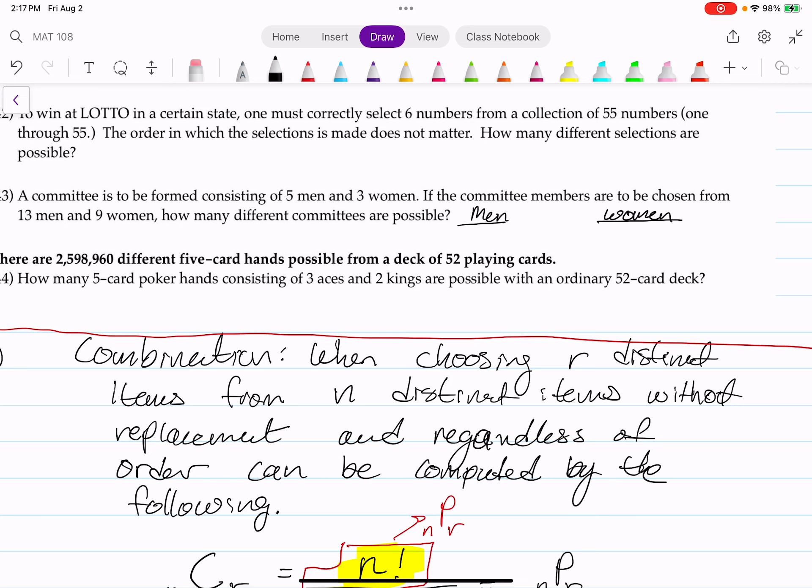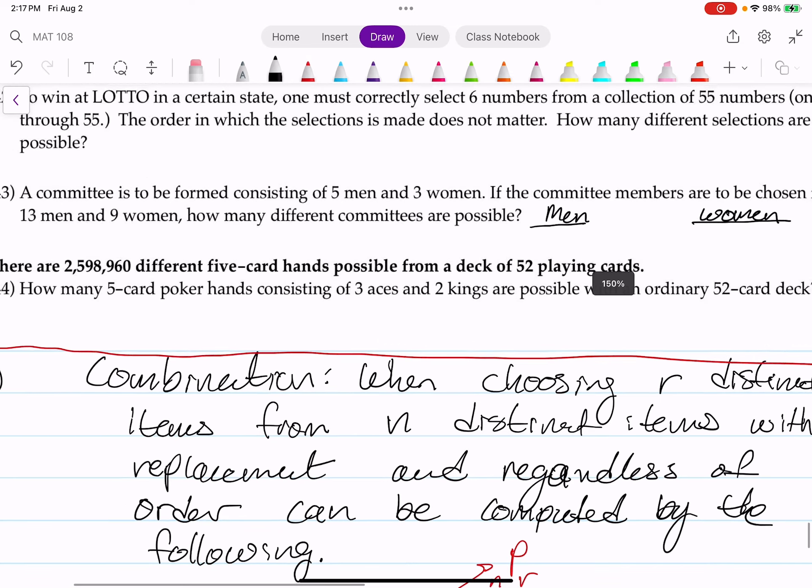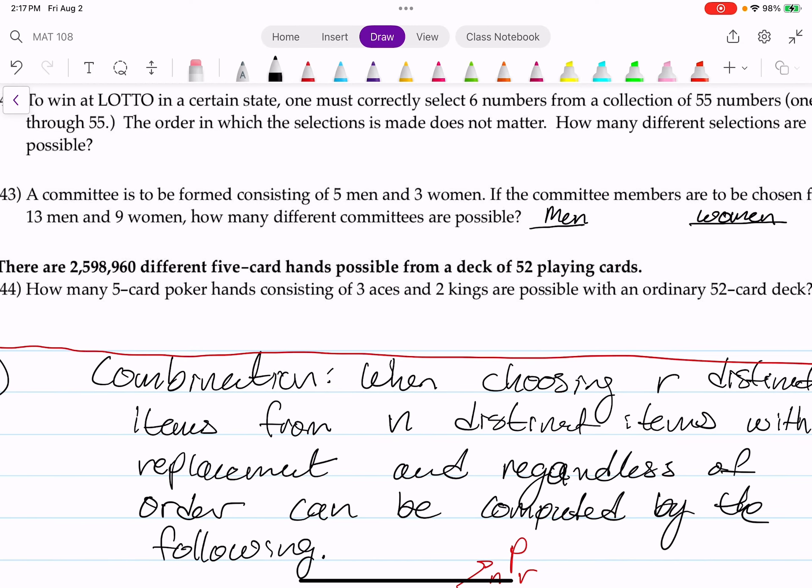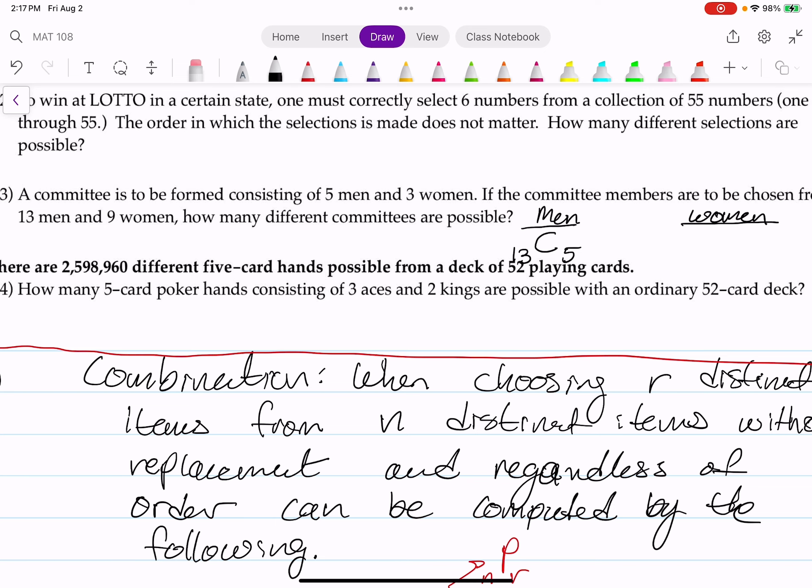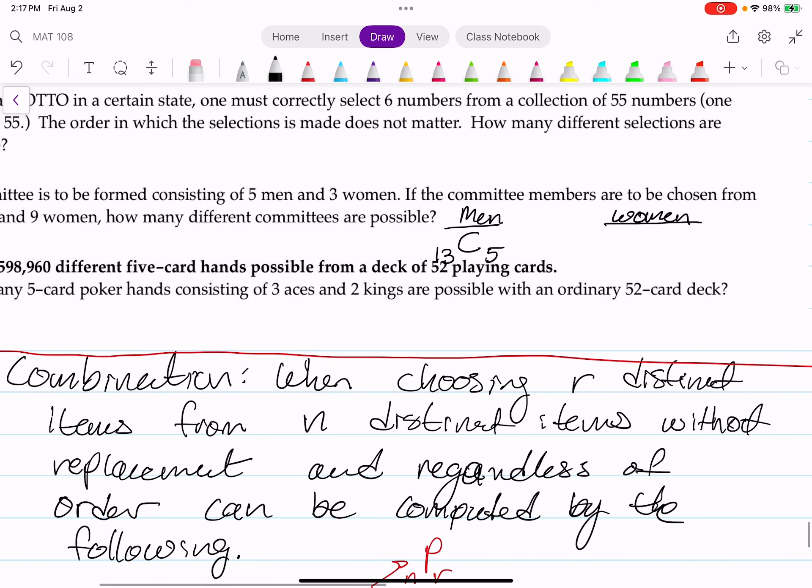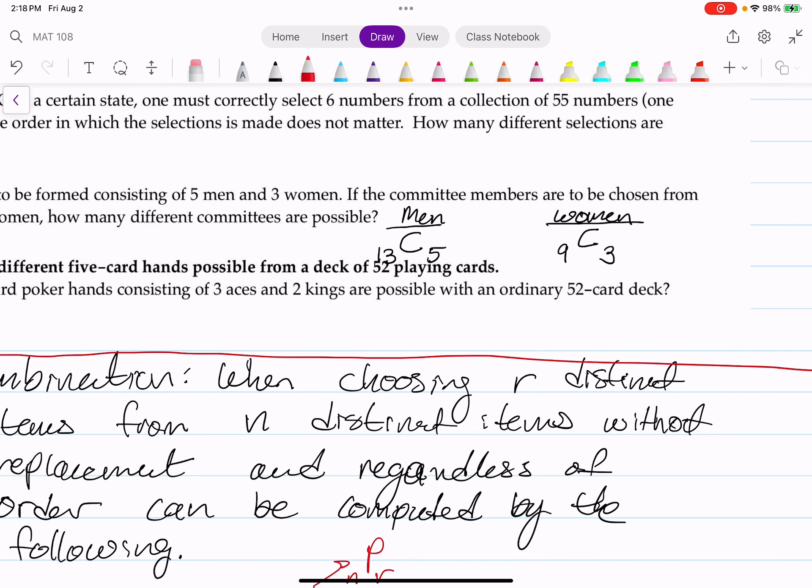For men, there are 13 men in total and you're choosing five. That's the combination of 13 choosing five and the order doesn't matter. For the women, there are nine women and you're choosing three and the order doesn't matter. That is the combination of nine women choosing three. Because we want to find out how many ways this can be done and we have two different events, choosing men and choosing women, hence we have to go back to the fundamental counting principle. We're going to multiply the number of ways each event can occur to find a number of ways that the sequence can occur.